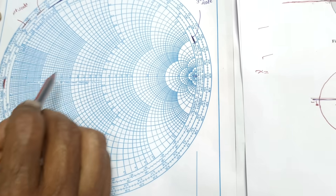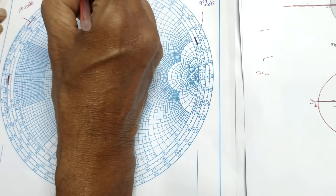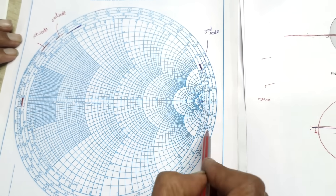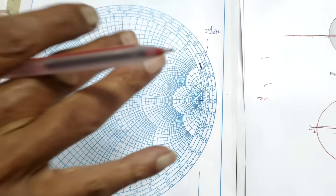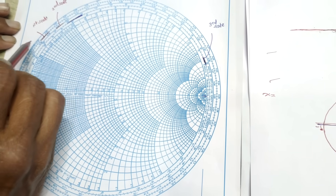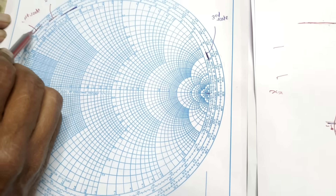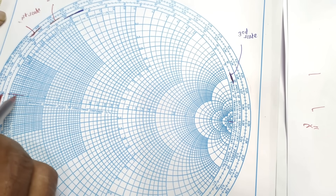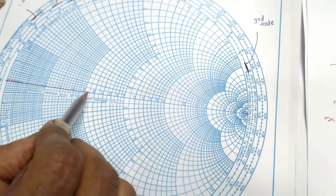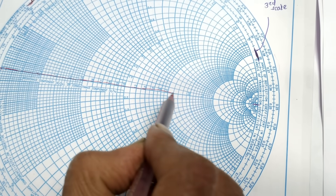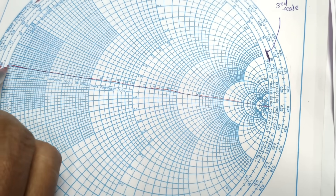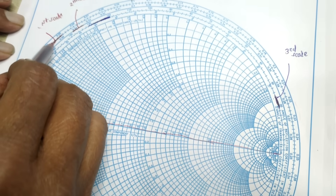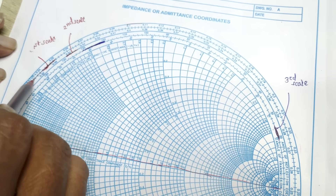Let me explain the other different scales marked on this chart. There is an outermost circle, and inside it the entire chart is marked. The horizontal line is taken as a reference. The first scale is on the outermost circle and is marked as 'Wavelength Towards Generator.'